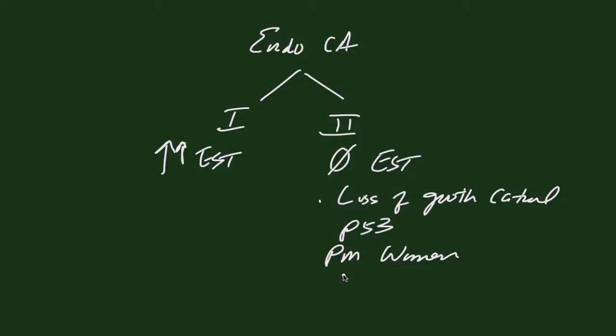These typically occur in postmenopausal women. And they can arise, and typically do arise, in a background of an atrophic endometrium. And we'll get into that a little bit more in a minute.